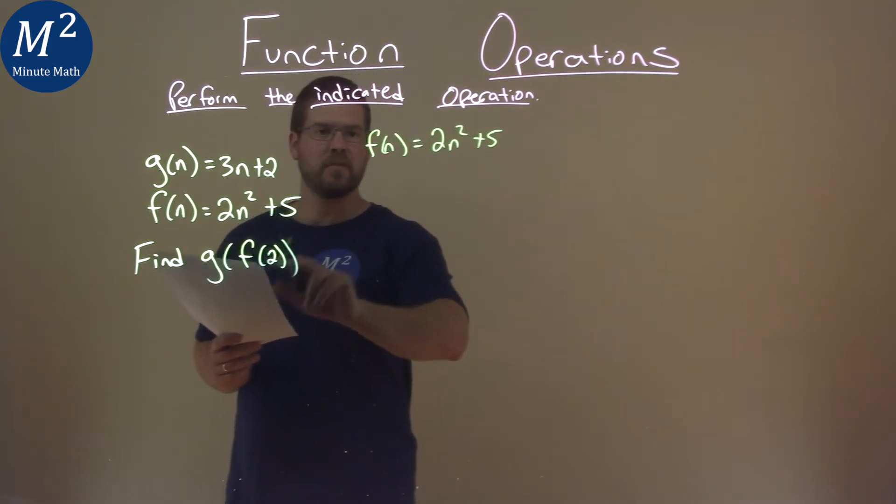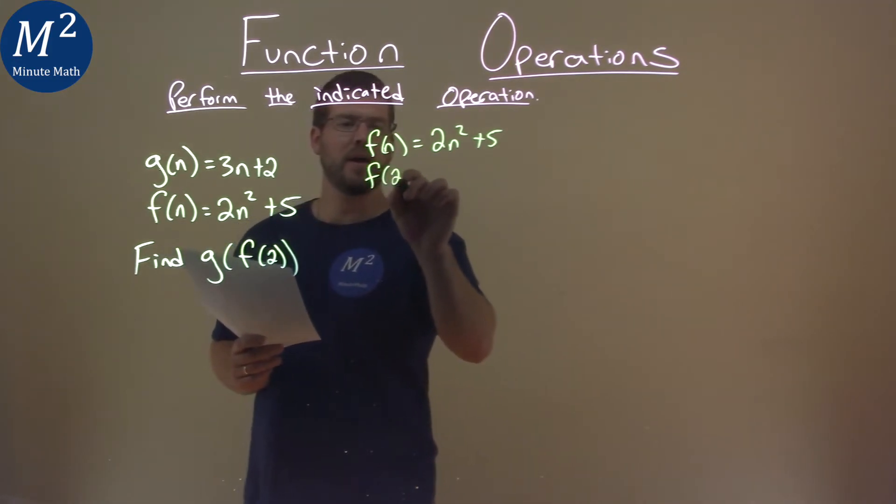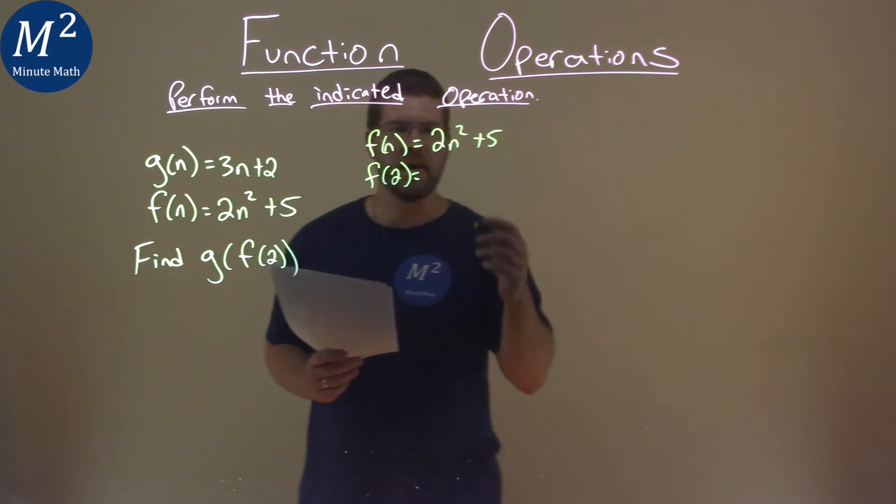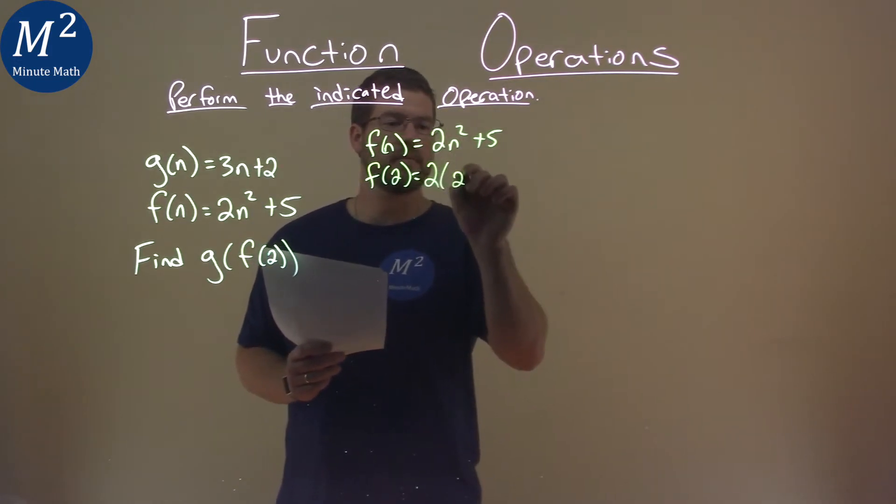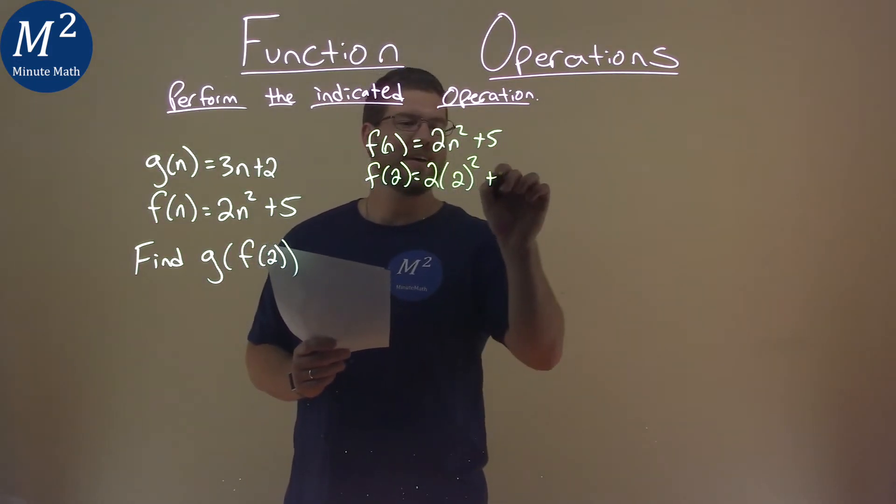So let's find f(2). We're going to plug 2 in for n. So we have 2 × 2² (lots of 2's) + 5.